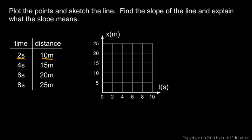At two seconds, we have a distance of 10 meters, so you can plot a point right there. At four seconds, we have a distance of 15. These are easy to plot. Six seconds and 20 meters, and eight seconds and 25 meters. So our line looks like this. Nice straight line.